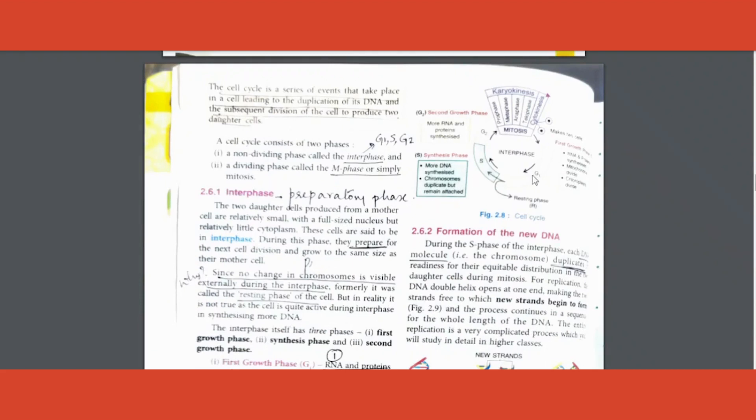See this cell cycle - you have to know the cell cycle properly because a lot of questions like odd one out, logical sequence come from here. What is the sequence? First there is in the cell cycle it starts with G1, S, G2, followed by PMAT. What is PMAT? Prophase, metaphase, anaphase, telophase. This sequence you should know clearly.